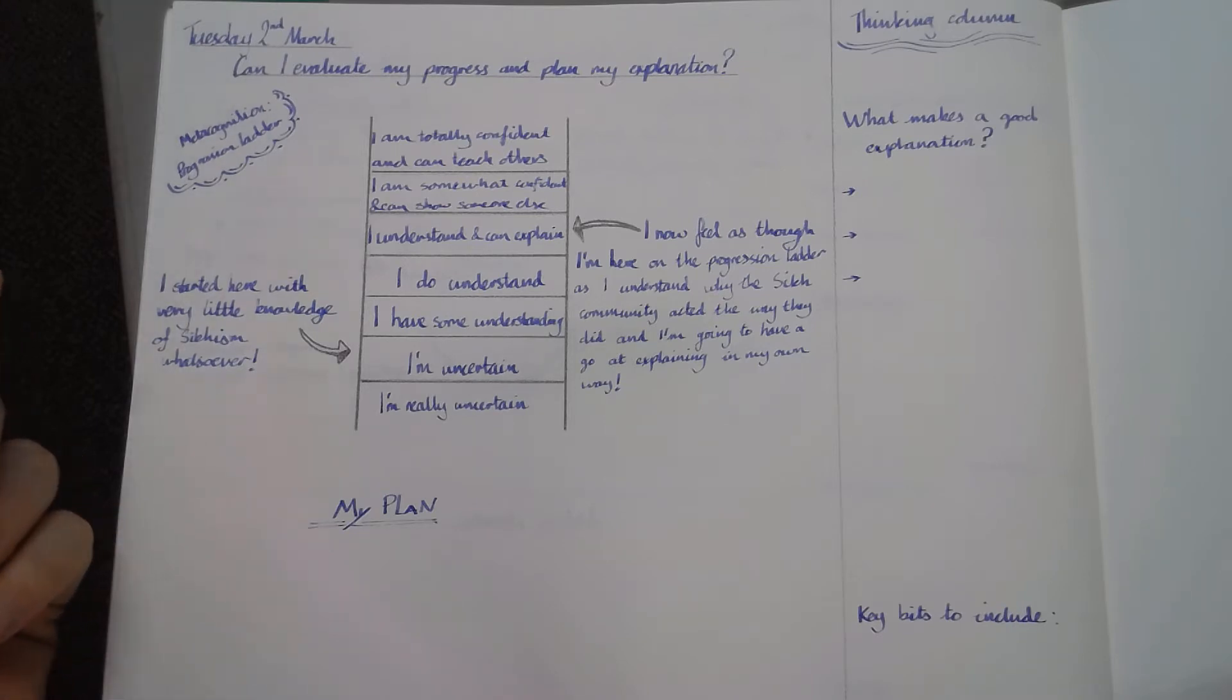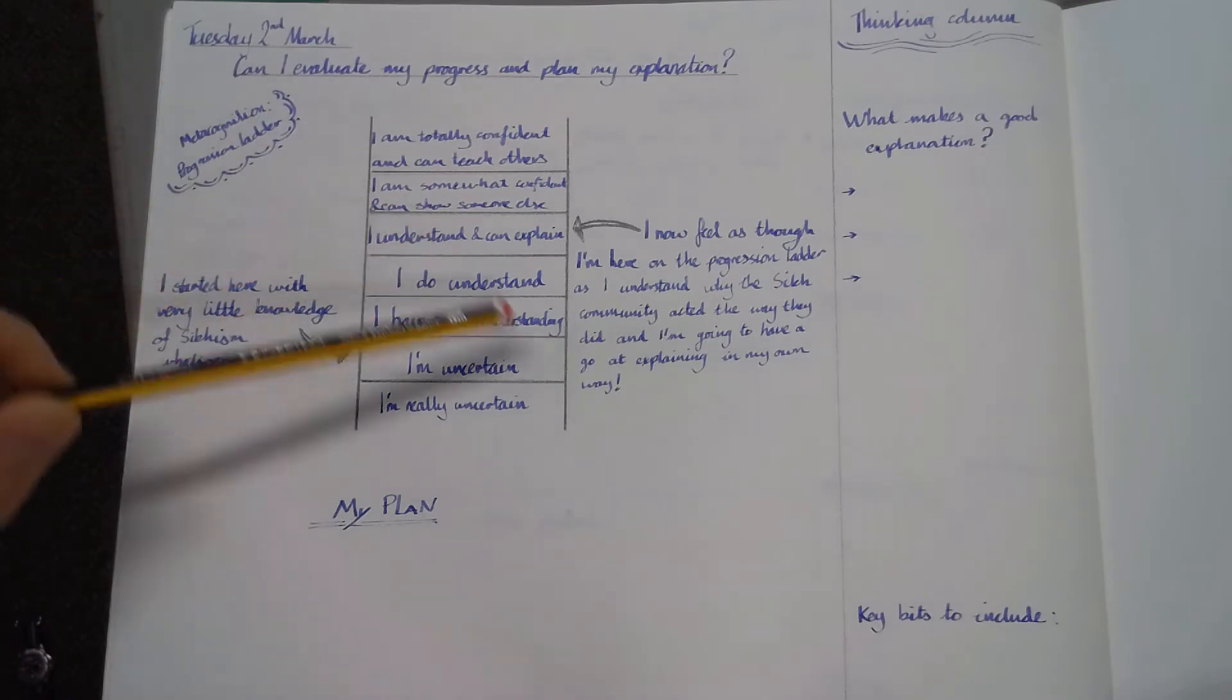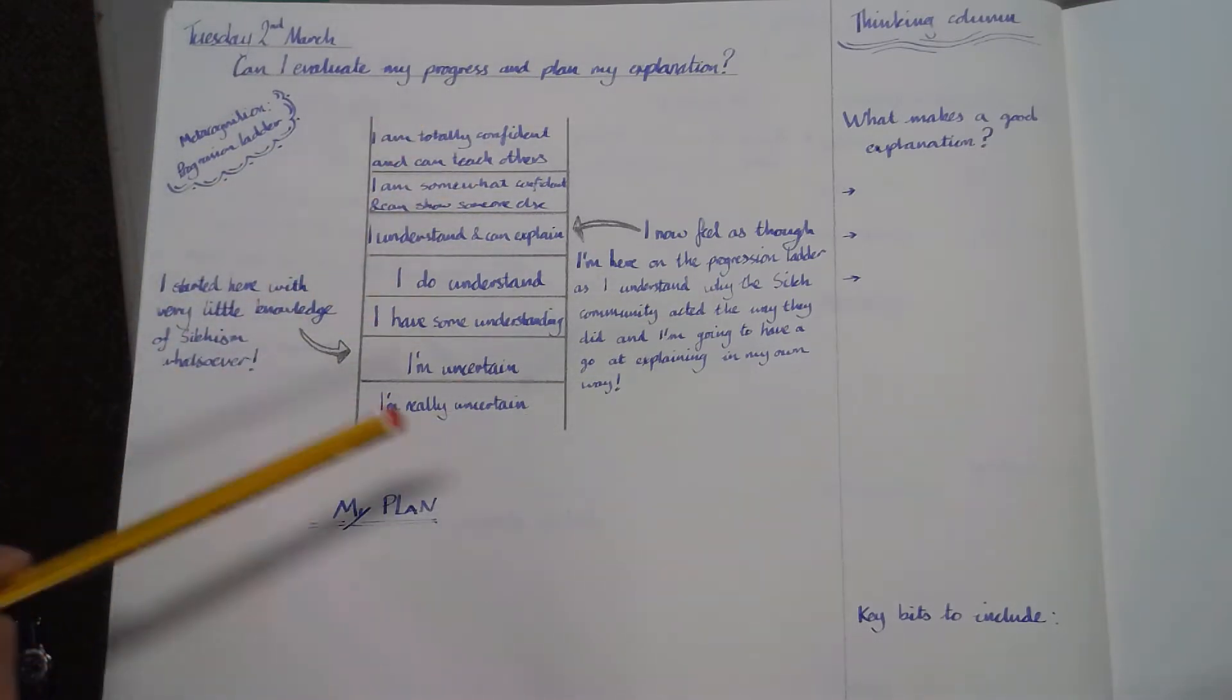By that we can get from this that we're going to be using our progression ladder again to look at how we've made progress in our learning and knowledge, and then we're going to plan out what we're going to do for our explanation.